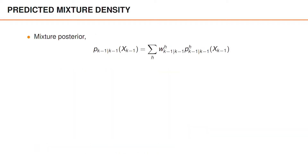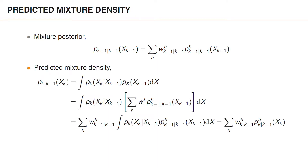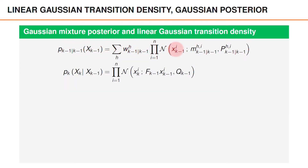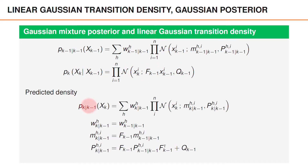Now, let's consider instead that we have a mixture posterior. Then we can show that the predicted density is a mixture density, where we predict each mixture component independently of all the other mixture components. So each hypothesis can be predicted independently of all other hypotheses, and the hypothesis probabilities, or weights, remain the same. If we have a posterior that is a Gaussian mixture and a transition density with a linear Gaussian motion model, then the predicted density has predicted weights equal to the posterior weights, and the predicted means and variances are given by the Kalman filter prediction.